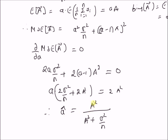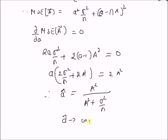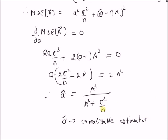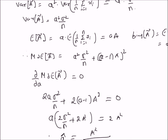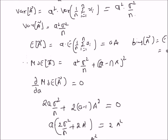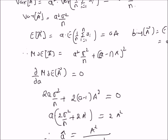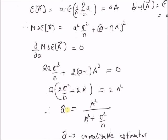Clearly, the estimator â depends on the true value of a, which is undesirable. So â is an unrealizable estimator. Under the condition that n is infinite, this value becomes 1 in the limit, making ã equal to the sample mean, which is the minimum variance unbiased estimator for the constant a. However, for finite values of n, â is dependent on the true value of a and is unrealizable.